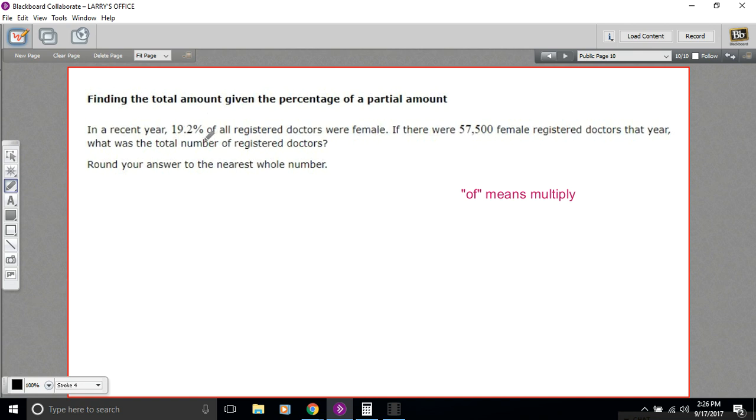So in this case, it says in a recent year, 19.2% of all registered doctors were female. If there were 57,500 female registered doctors that year, what was the total number of registered doctors?